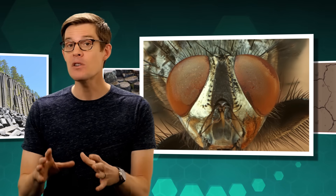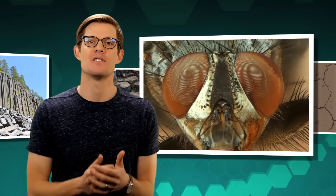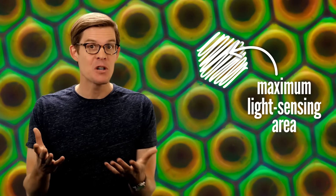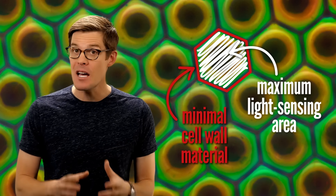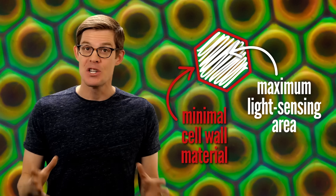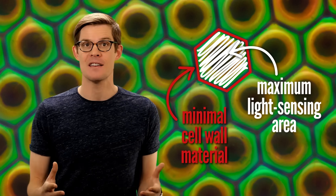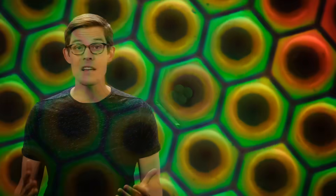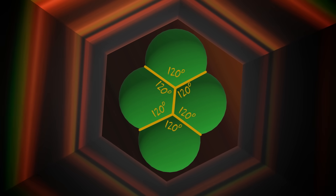What about the facets of an insect's eye? Here, instead of a physical force like in the bubble or the rock, evolution is the driver. Maximum light-sensing area is good for the insect, but so is minimizing the amount of cell material around the edges. Just like the bubbles, the best shapes are hexagons. What's even cooler: if you look down at the bottom of each facet, there's a cluster of four cone cells packed just like bubbles are.